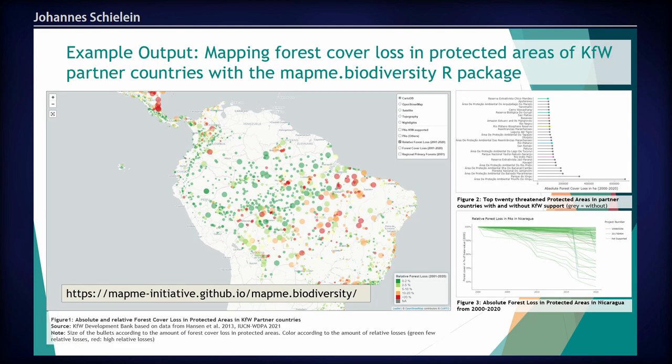One of the things we can produce from this package is an analysis where we assess the threat levels in protected areas in our partnering countries. We can clearly spot where the hotspots of forest cover loss are and where we should engage more. We can also map that to our portfolio and try to engage in those areas that are most urgently in need and where we are currently not active.